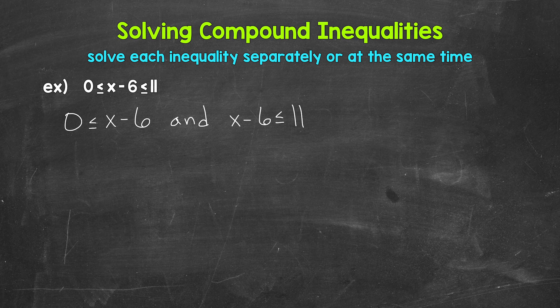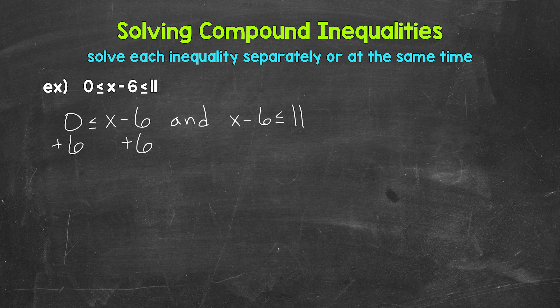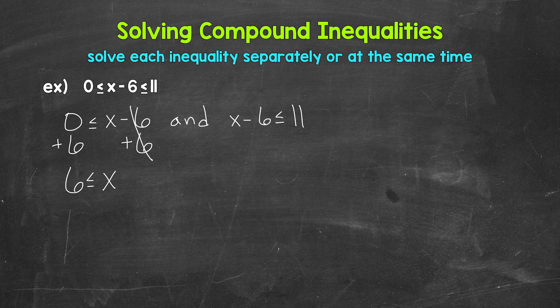Those are the two inequalities we need to solve. Let's start with 0 is less than or equal to x minus 6. We need to isolate x. We have x minus 6, so we need the inverse operation of subtraction, which is addition. Let's add 6 to the right side of the inequality — whatever we do to one side, we must do to the other — so let's add 6 to the left side as well. The 6s on the right cancel each other out, so x is now isolated. We have 0 plus 6 gives us 6, so we end up with 6 is less than or equal to x, or x is greater than or equal to 6.